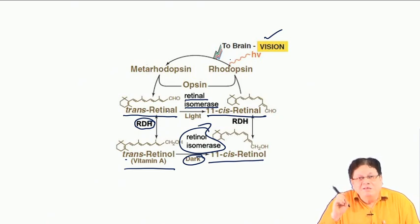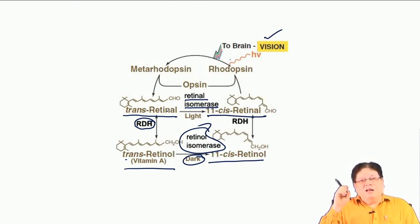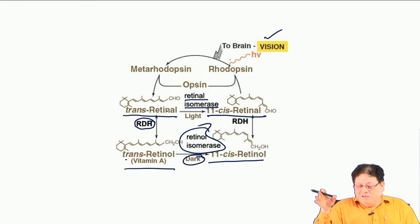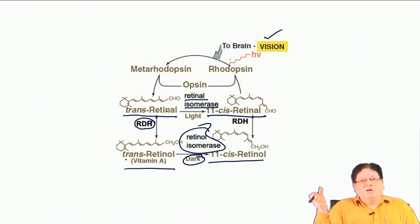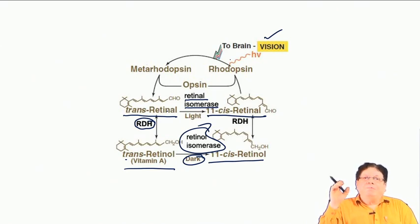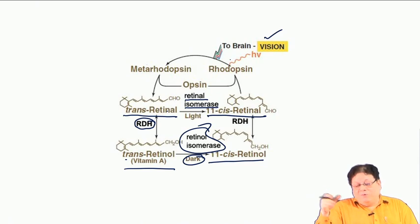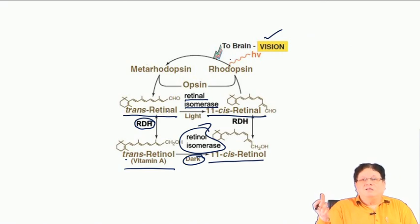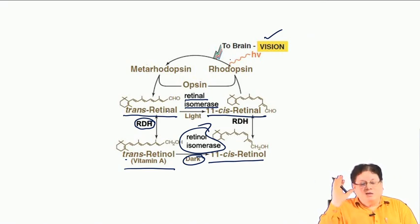When the aldehyde is needed it forms rhodopsin. Basically, trans retinal is converted to 11-cis, which reacts with opsin to form rhodopsin. As light is incident upon rhodopsin, there is a change of configuration from cis to trans, creating a change of conformation or geometry that generates a signal processed in the brain.